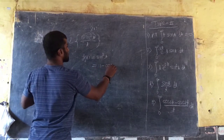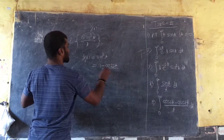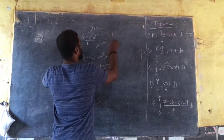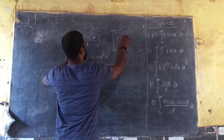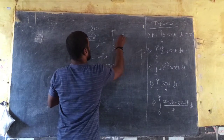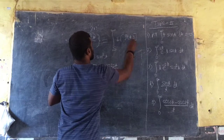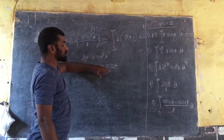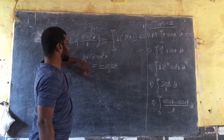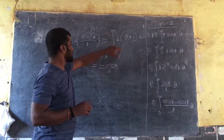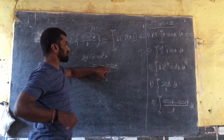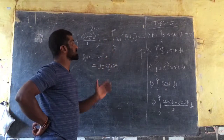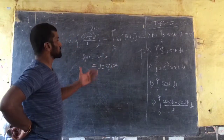Sine squared t can be written as 1 minus cos(2t) divided by 2. Then apply the definition: integrate from s to infinity of F(s) ds. The Laplace of 1 is 1/s, minus Laplace of cos(2t) which is s divided by s² plus 4. Then integrate both sides and simplify.